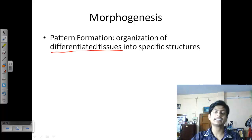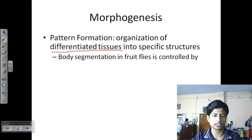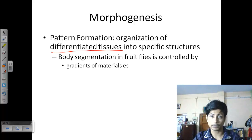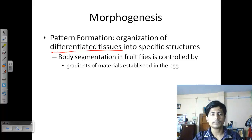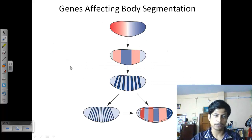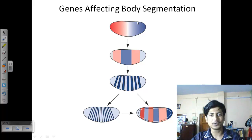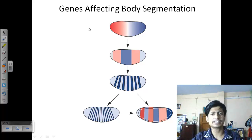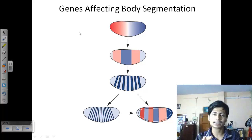Morphogenesis occurs after the gastrulation phase, once all tissues are already differentiated, and then they produce specific structures. In fruit flies, gradients of materials established in the egg and actions of a series of embryonic genes place structures into their specific forms. In insects like the fruit fly, the body has multiple segments: head, thorax, and abdomen.